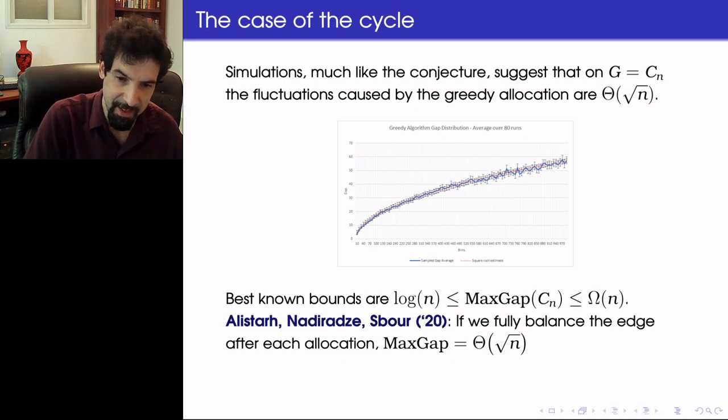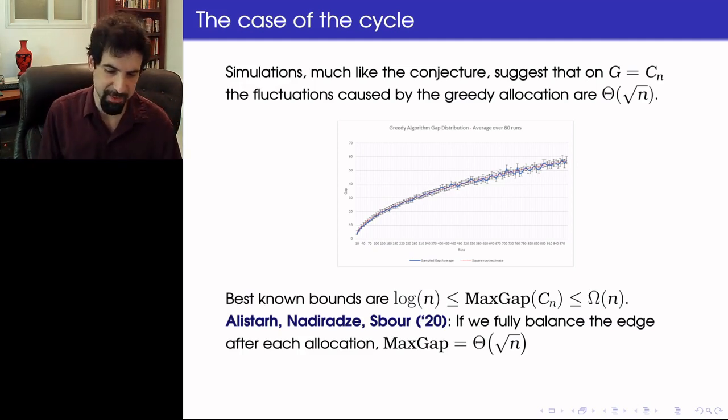But if you want additional evidence beyond the simulative evidence, then Alistair, Naor, and Saber in 2020 considered an alternative model where we select an edge and we take all the balls from both of its sides and add one more ball and fully balance them among the two sides of the edge, even if it means cutting a ball into two. And they showed that in this stronger balancing model, the maximum gap is of order square root N. So it seems very unlikely that greedy allocation could do any better.